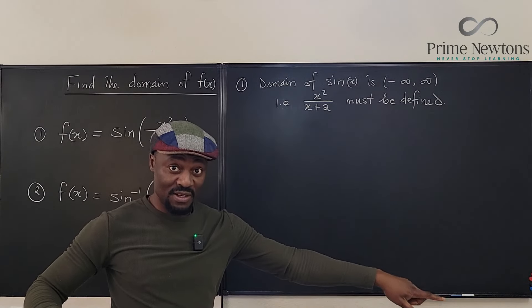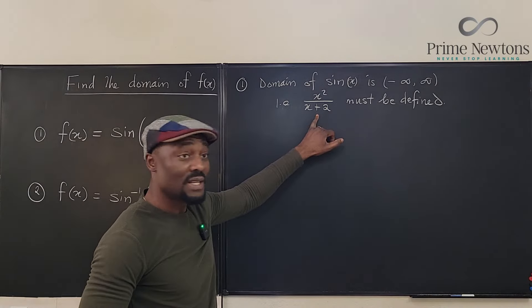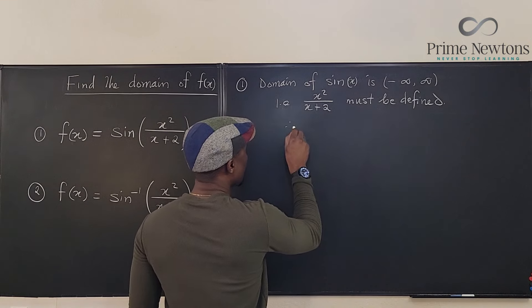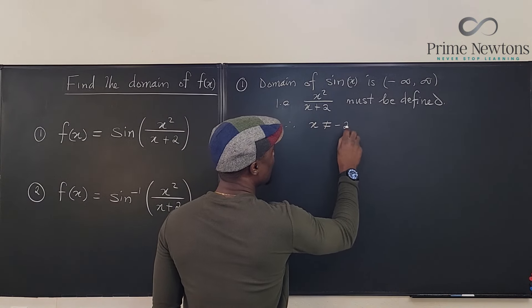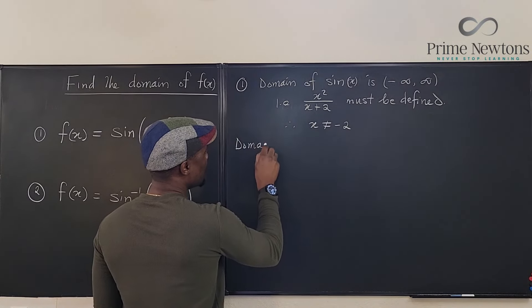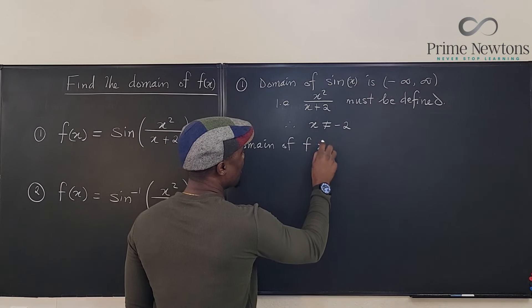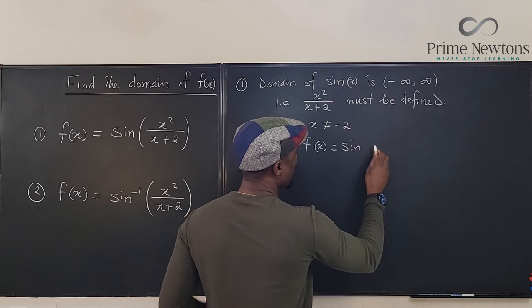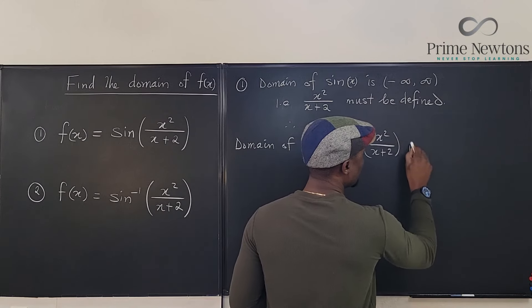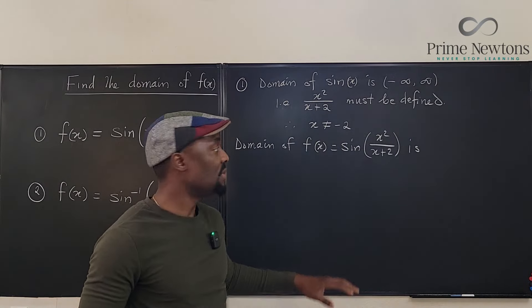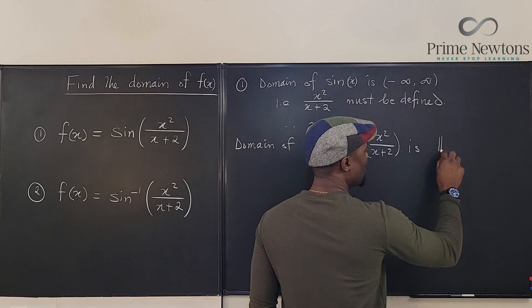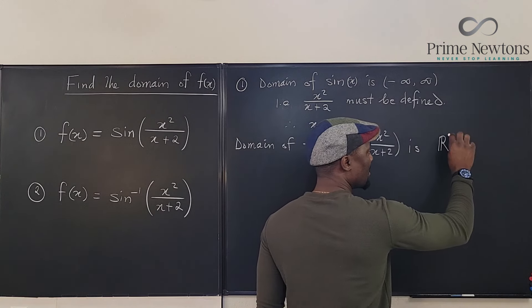Once it is defined, it is on the number line. So is this defined everywhere? No, it is not defined when you get a zero in the denominator. So we say therefore x is not equal to negative 2. So we can clearly say that the domain of f of x equals sine of x squared over x plus 2 is the set of all real numbers except negative 2.